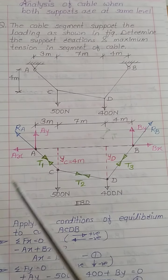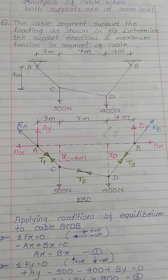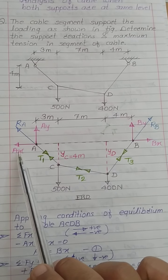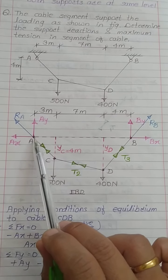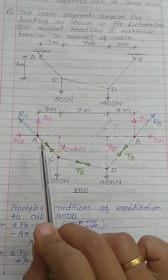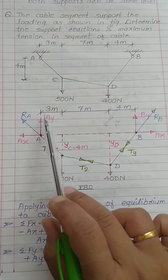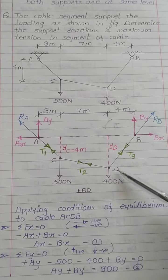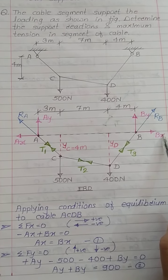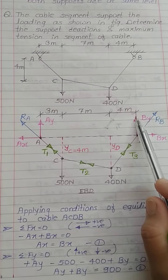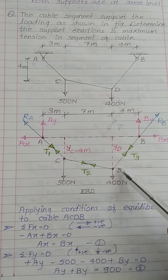Now we will draw a free body diagram for the given problem. You have to show the same shape with reactions instead of just showing supports — as I explained in my previous video on basic concepts of cables. Extending the line AC into the second quadrant, the horizontal component of Ra acts towards the left and the vertical component acts upward. Extending BD into the first quadrant, Bx acts to the right and By acts upward. Between segments AC, CD, and DB there will be tensions T1, T2, and T3 respectively.